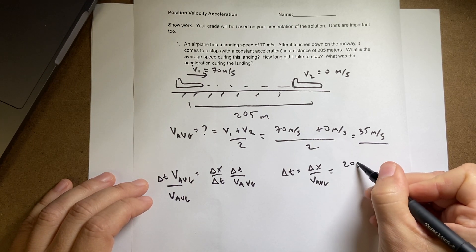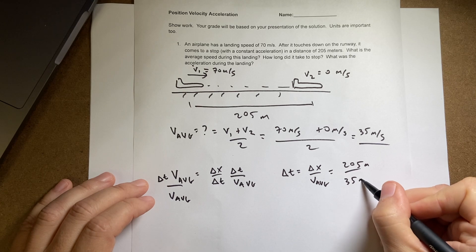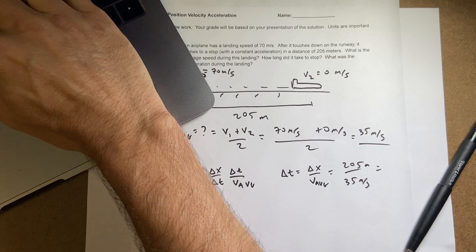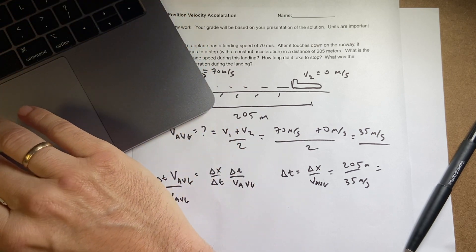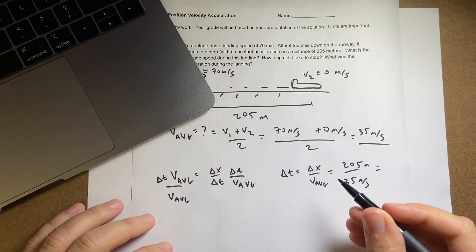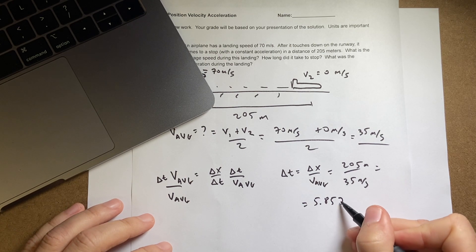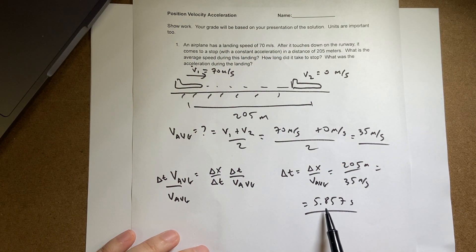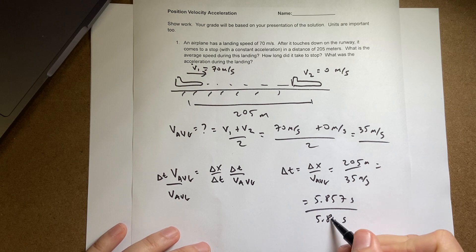So this is going to be 205 meters divided by 35 meters per second. Computing that: 205 divided by 35 gives 5.857 seconds. As for decimal places, you could apply significant figures, but it doesn't really matter too much. I'd say approximately 5.86 seconds.